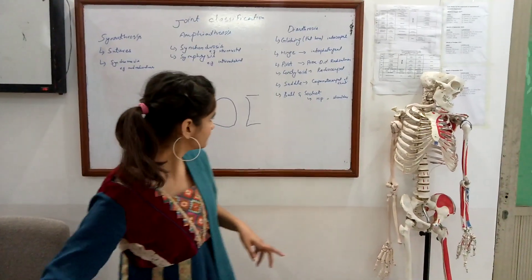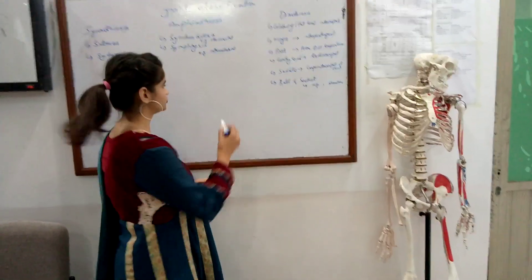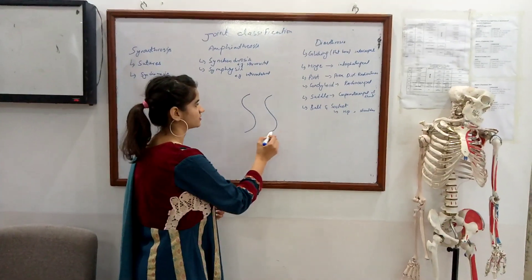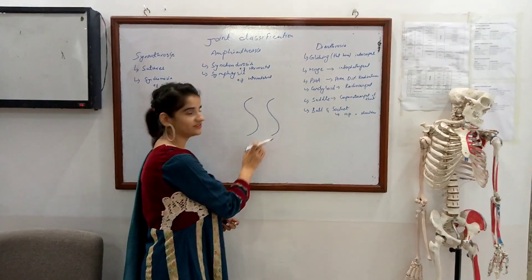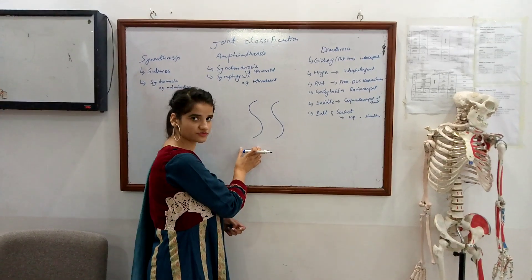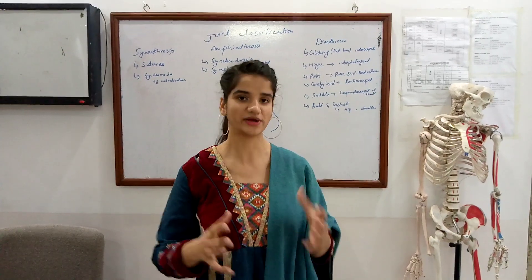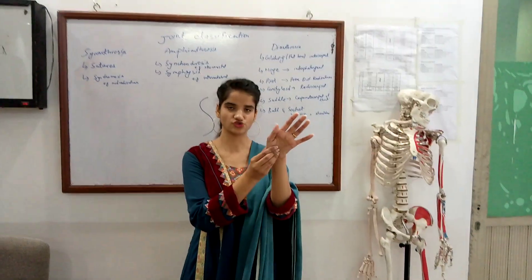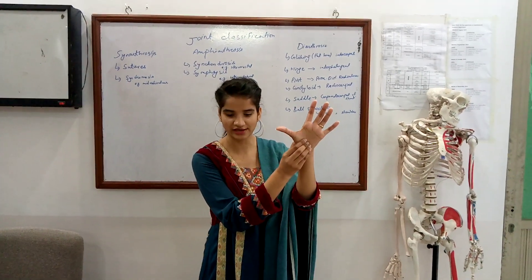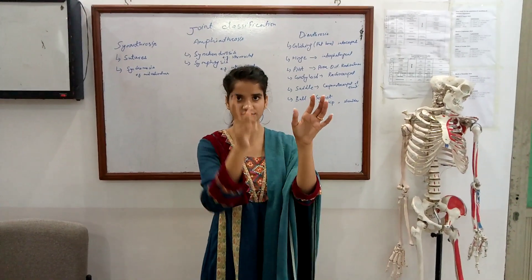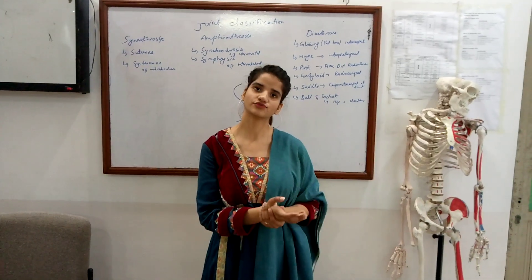Then comes the saddle joint. A saddle joint is a joint where two bones have saddle-shaped surfaces — meaning on one side of the joint there is a convex and concave surface, and similarly on the other side. This joint is formed at the carpal-metacarpal of the thumb and is known as a saddle joint. It allows more range of motion than the condyloid joint.